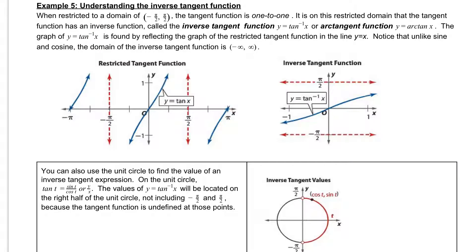The graph of the inverse tangent function is found by reflecting the graph of the restricted tangent function in the line y equals x.